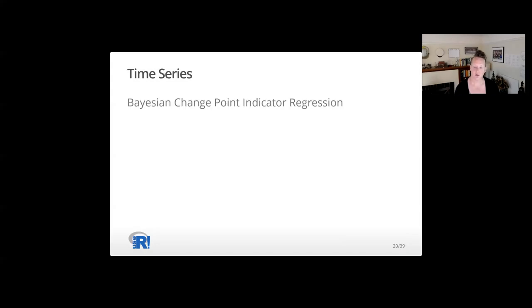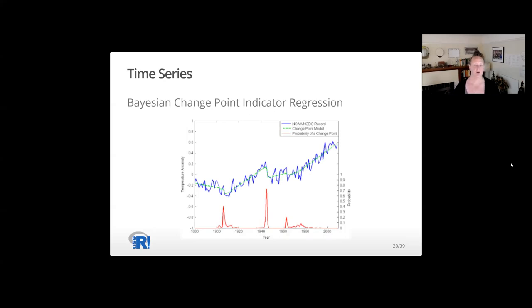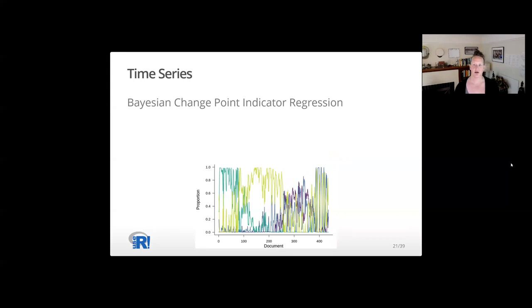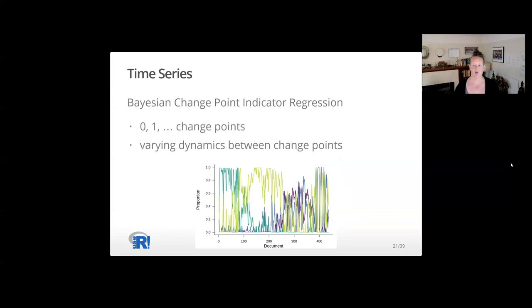Turning to the predictor components of the model, following Christensen et al., the LDATS methodology uses Bayesian change point regression based on an indicator approach. As shown in a figure from Ruggieri's paper applied to NOAA temperature data, the model can identify qualitative changes as change points in the face of additional cyclic dynamics. In our ecological data, we expect potentially none or many change points with variable dynamics between them, governed in a regression sense by covariates and regressors that may change between change points.